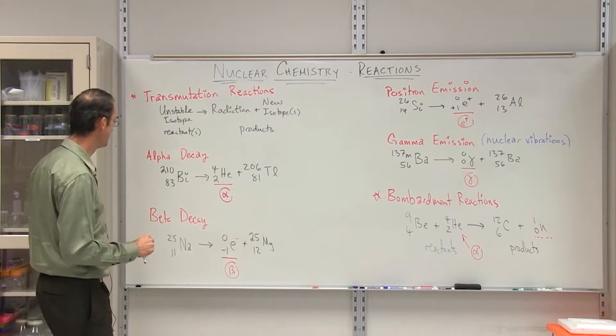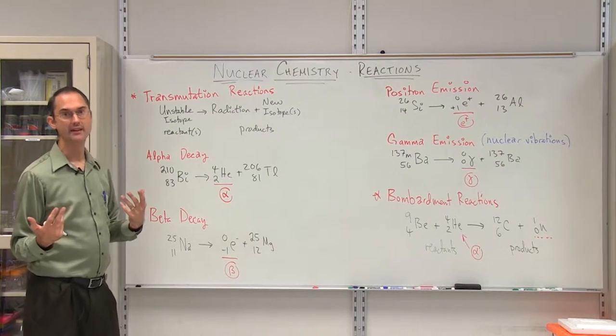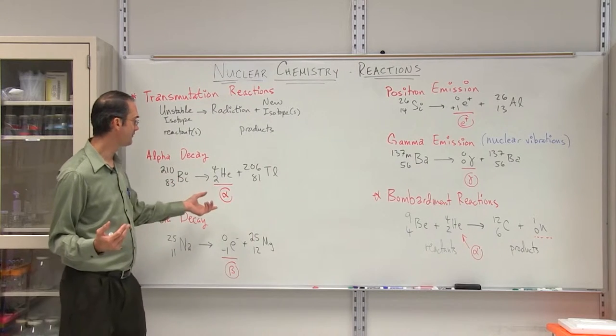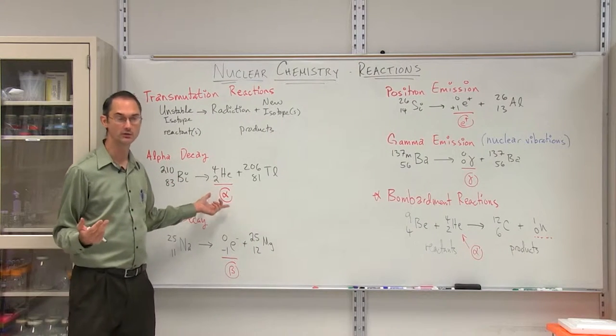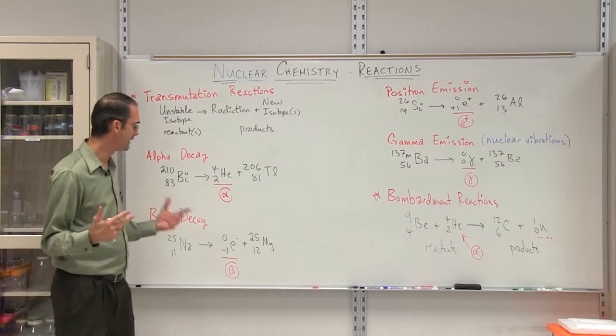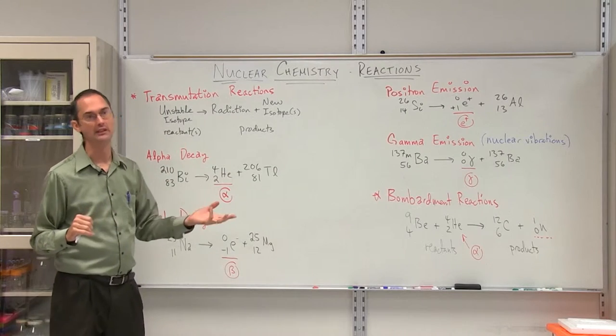The next type of decay we're going to be taking a look at is beta decay. Chronologically speaking, they found beta particles after they found alpha particles. It just so comes out that alpha particles are helium nuclei and they don't really have a whole lot of energy in them compared to beta decay, which beta decay is really electrons coming out of the nucleus.